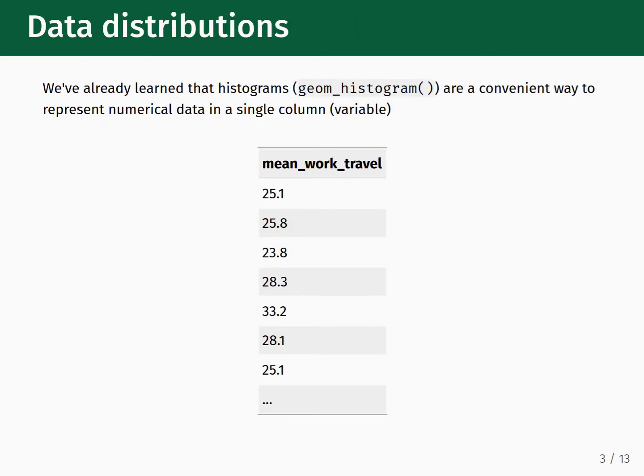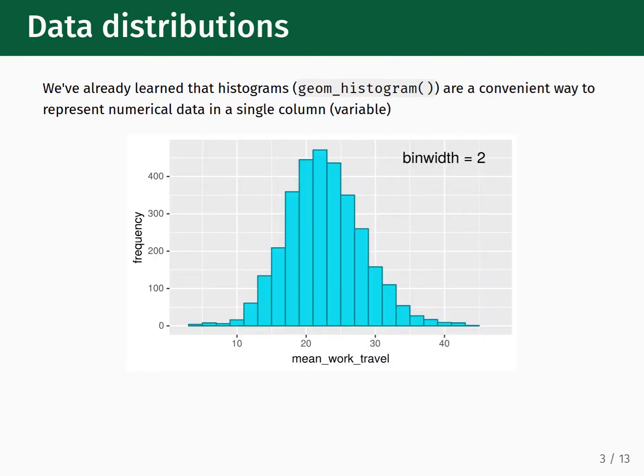We've learned in earlier lectures that we can plot histograms using the geom_histogram function from ggplot2, and that histograms are a convenient way to represent numerical data in a single column. In the county dataset we're using as an illustrative example in this module, we've been looking specifically at the mean_work_travel column. This column represents the average work travel time in minutes for 3,143 different counties in the United States. The histogram, when plotted, looks like this.